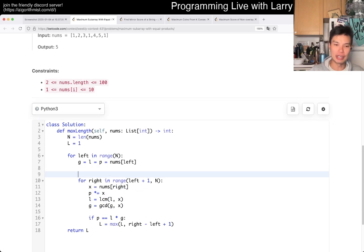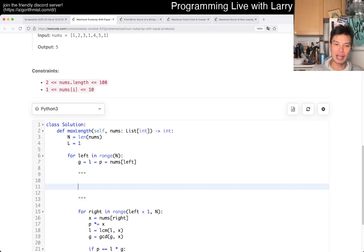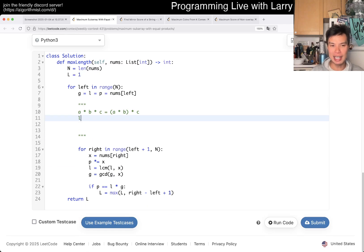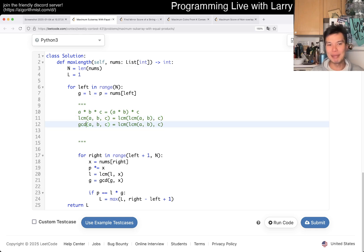The reason is because A times B times C is equal to A times B, and then times C. Equivalently, LCM of A, B, C equals LCM of LCM of A and B, and then C. The same thing for GCD. Because of that, you can do it one at a time.